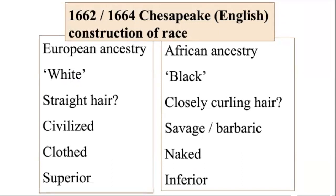Ultimately, the only thing that mattered to people writing laws in the 17th century Chesapeake—and these were all white men writing laws—was some degree of African ancestry. Everything else was there for justification. You have seen the English obsession with a particular idea of purity in both lecture and the Brown reading from Foul Bodies. The system created in the Chesapeake makes the linked binaries: European ancestry/African ancestry, white/black, straight hair/closely curling hair, civilized/savage or barbaric, clothed/naked.